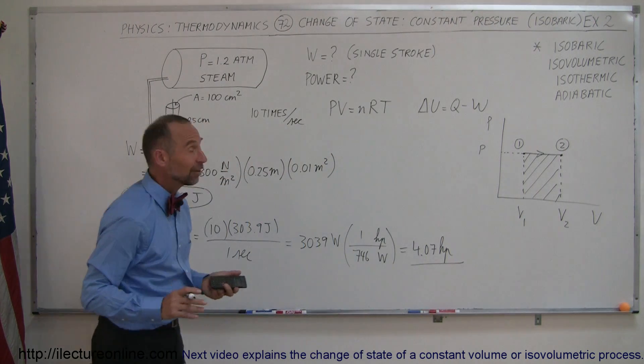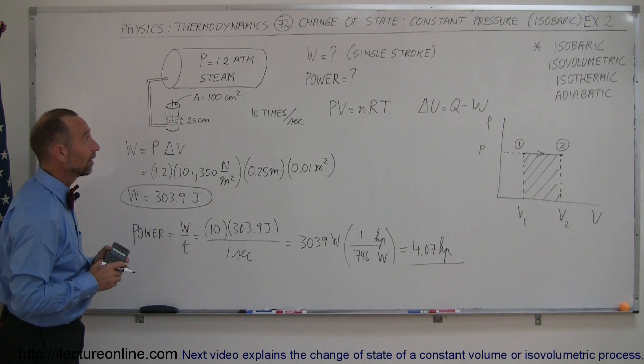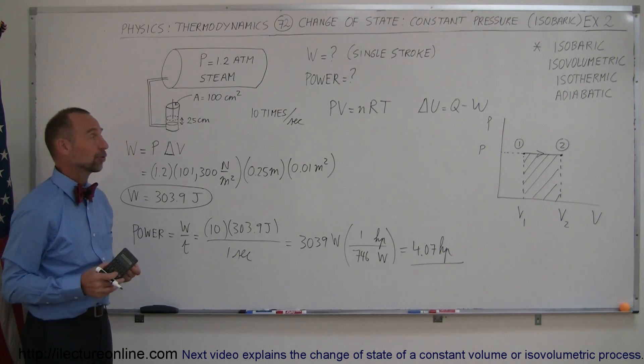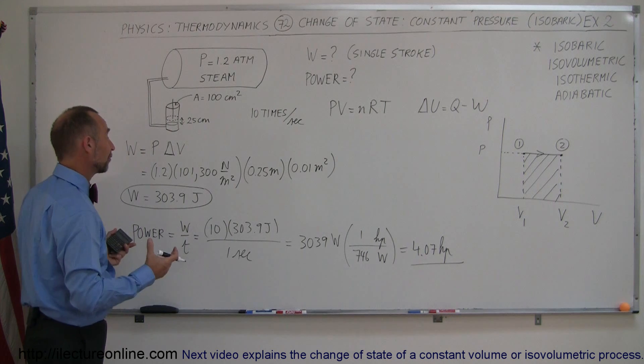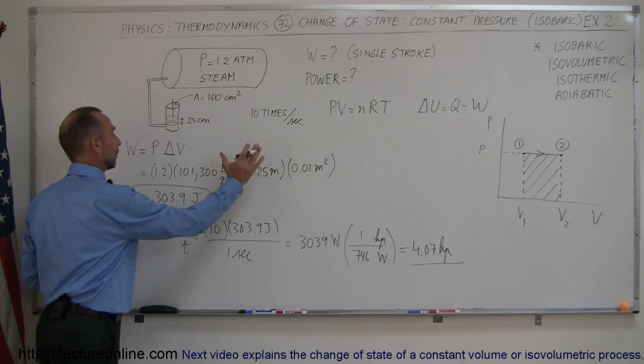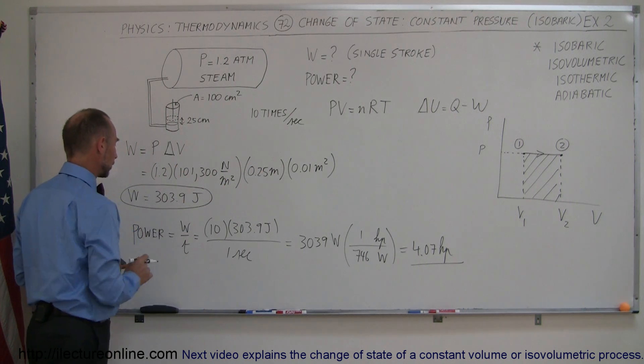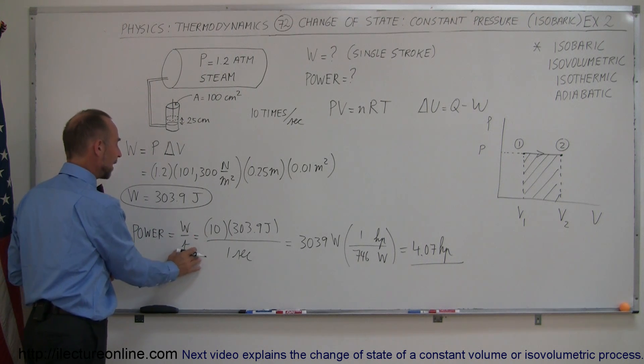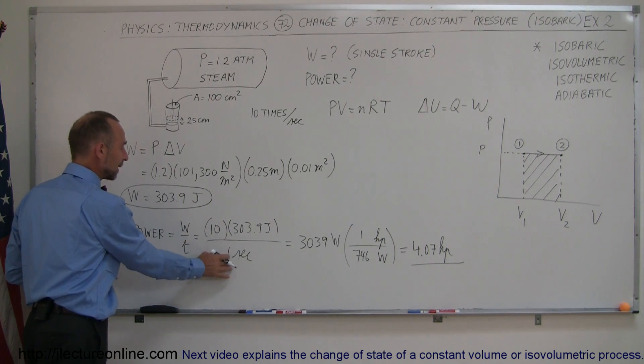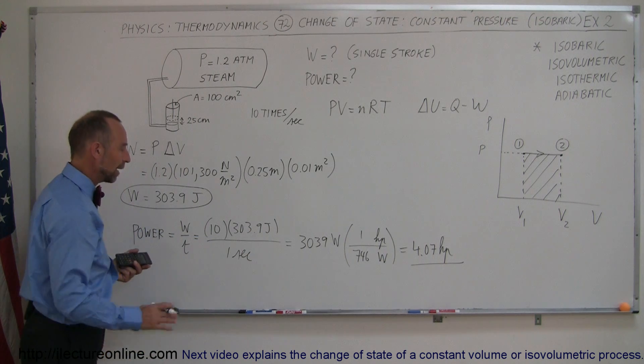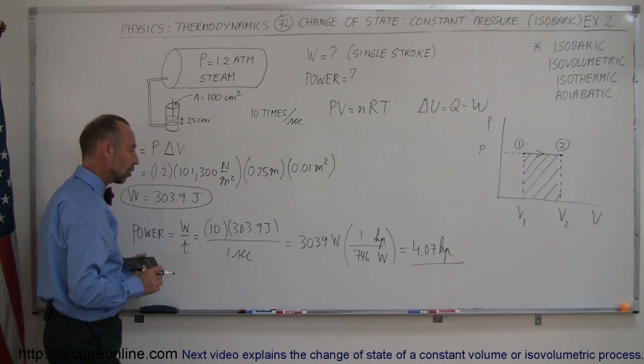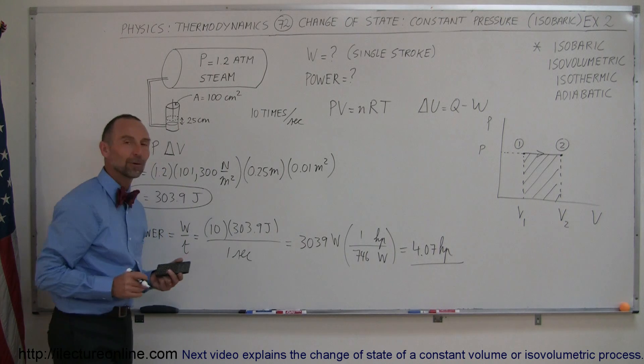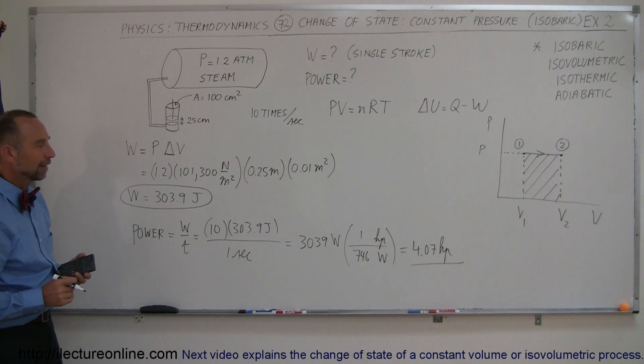All right. And that is how we use this process, what we call an isobaric process or a constant pressure process, to find the work done. It's very straightforward. Pressure times a change in the volume gives you the work done by a single stroke of the piston. The power, total work divided by time, 10 times per second, times the amount of energy or amount of work done by each stroke. And we get the horsepower or power of that little piston.